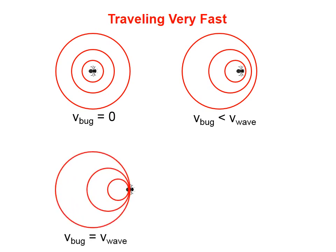If the bug travels exactly the same speed as the wave, we're going to get a pattern that looks like this. And that's going to be called a wave barrier. This bug is going to have to expend a lot of energy trying to overcome that wave barrier.